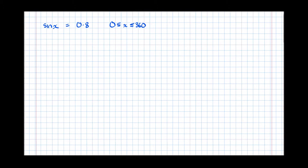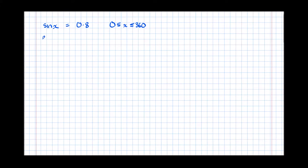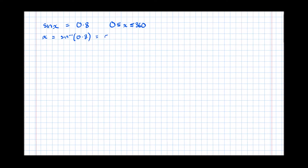The first thing we should do is get our calculator and find the first root. The first root is where we inverse sine 0.8, which gives us 53.130. So x equals the inverse sine of 0.8 — just to double-check — equals 53.130.